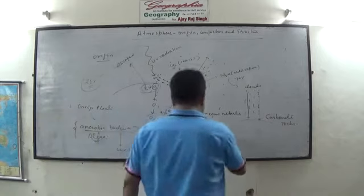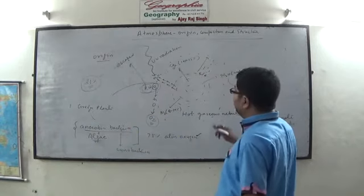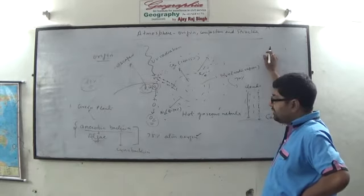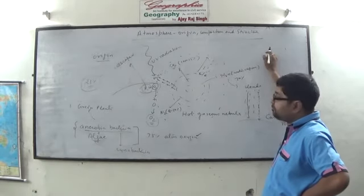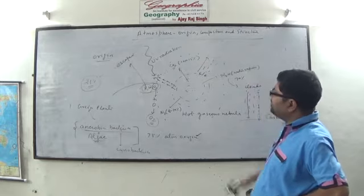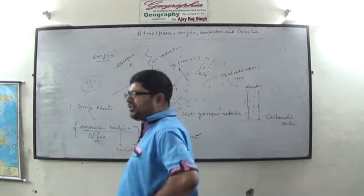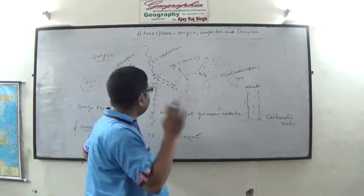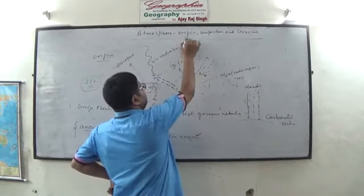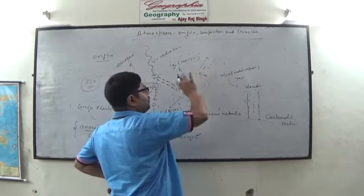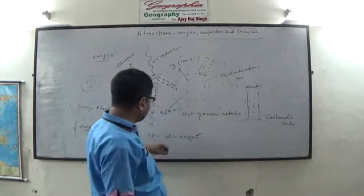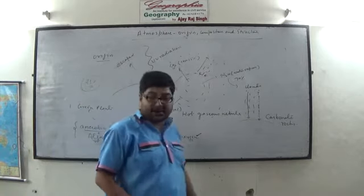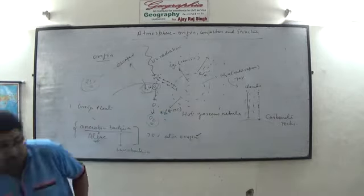This theory is the most acceptable explanation for the origin of atmospheric oxygen. This is how gradually the present composition of the atmosphere was achieved. Now let us come to the second part — this was the origin. Rest of the gases were released from the cooling of the earth, and oxygen was formed in the fashion described. The second part is composition.